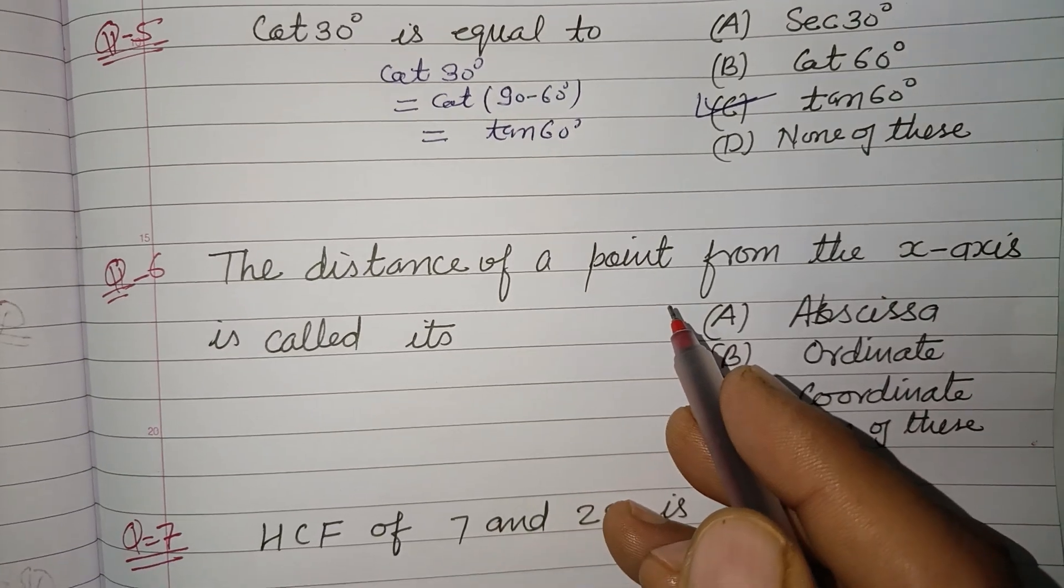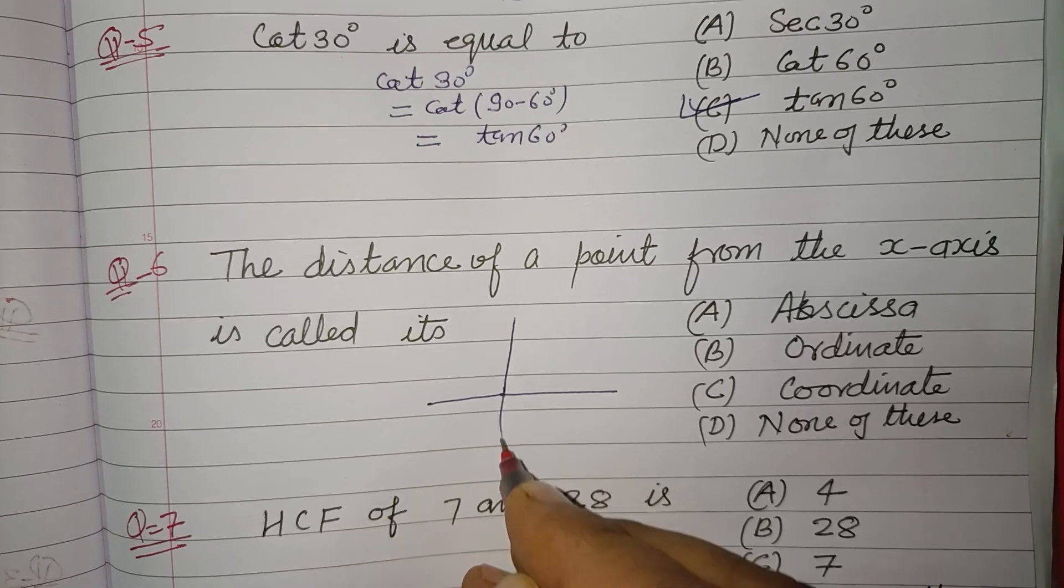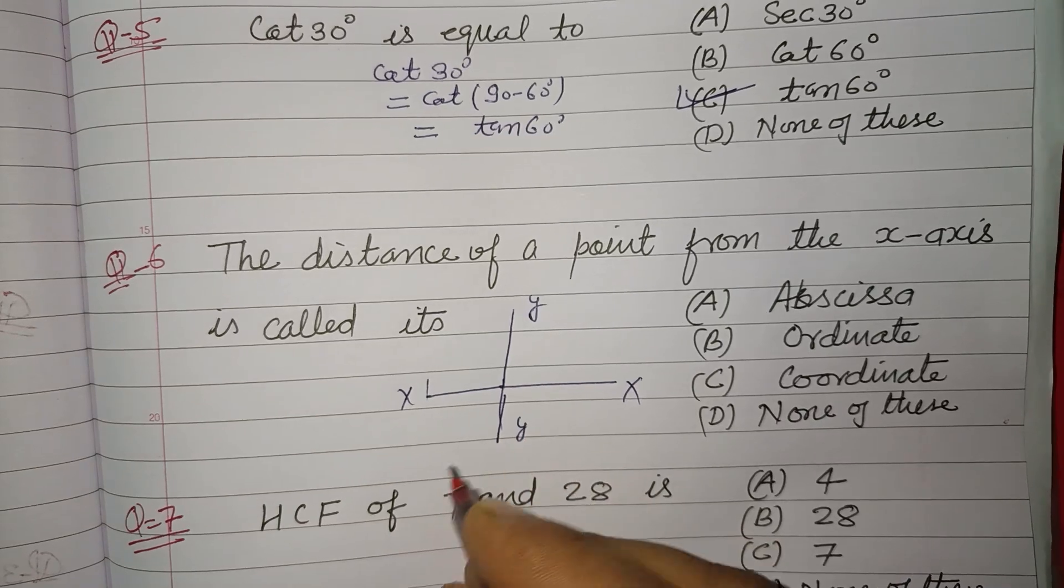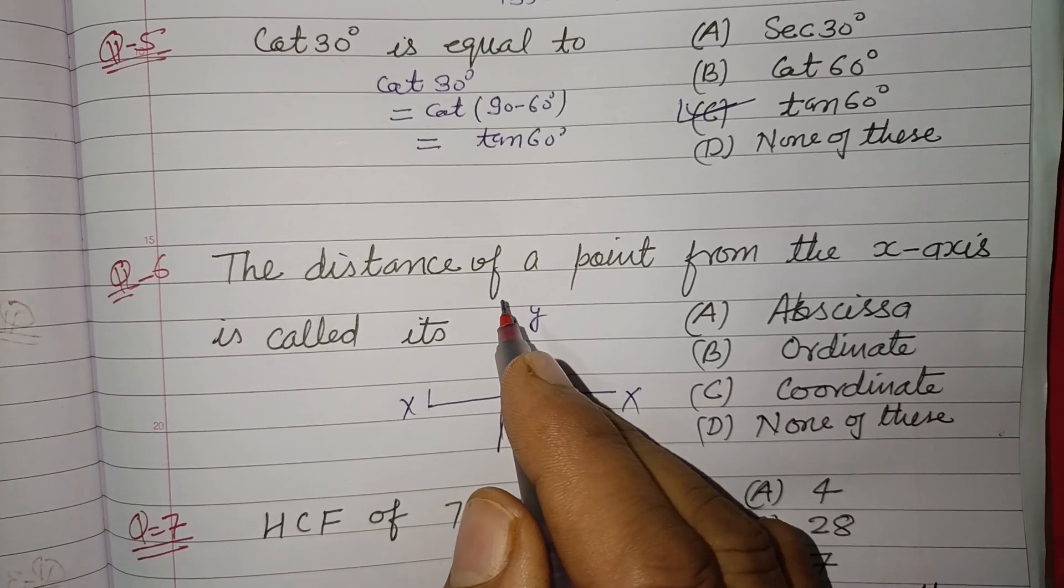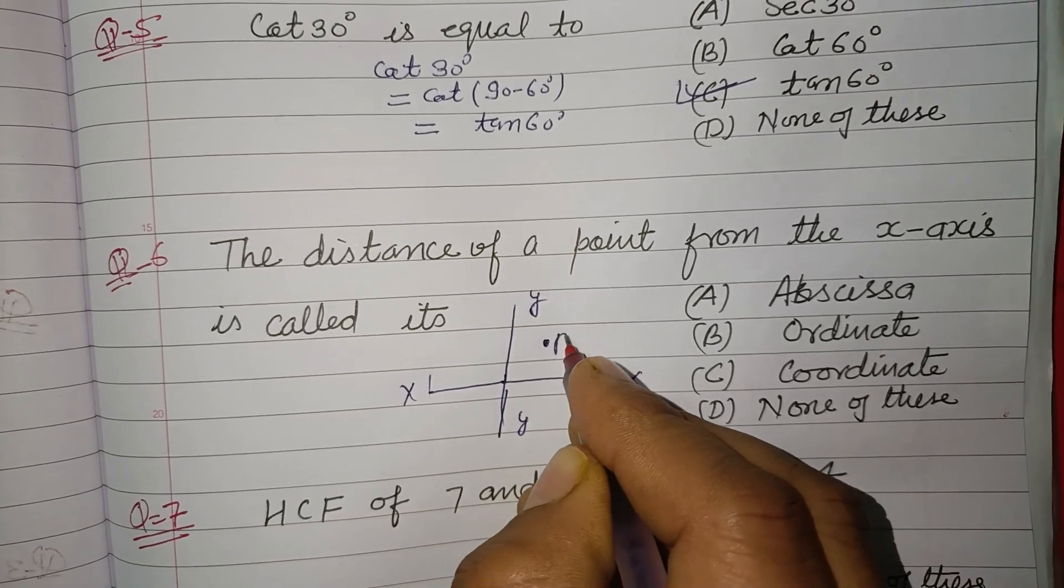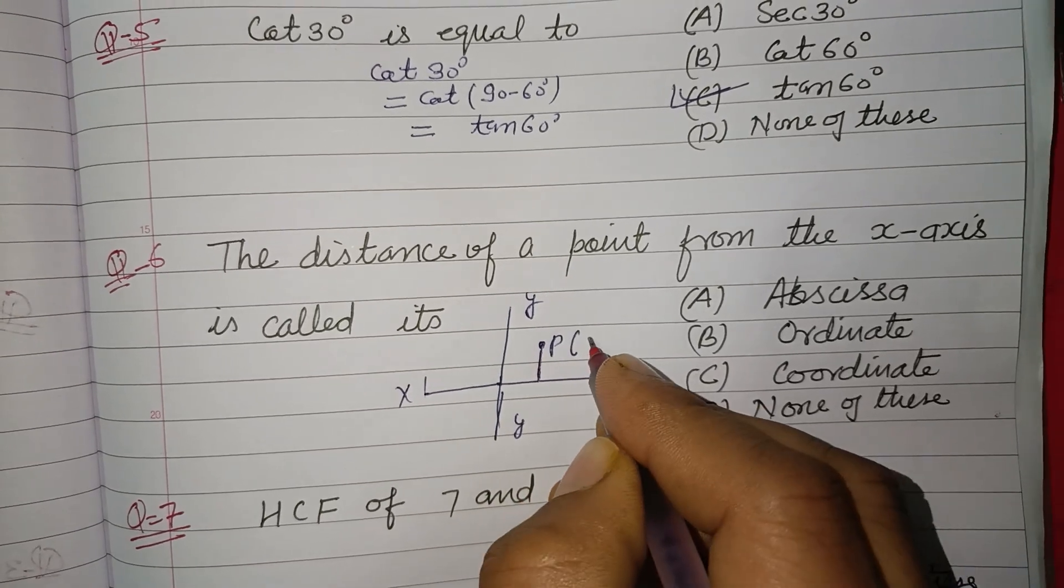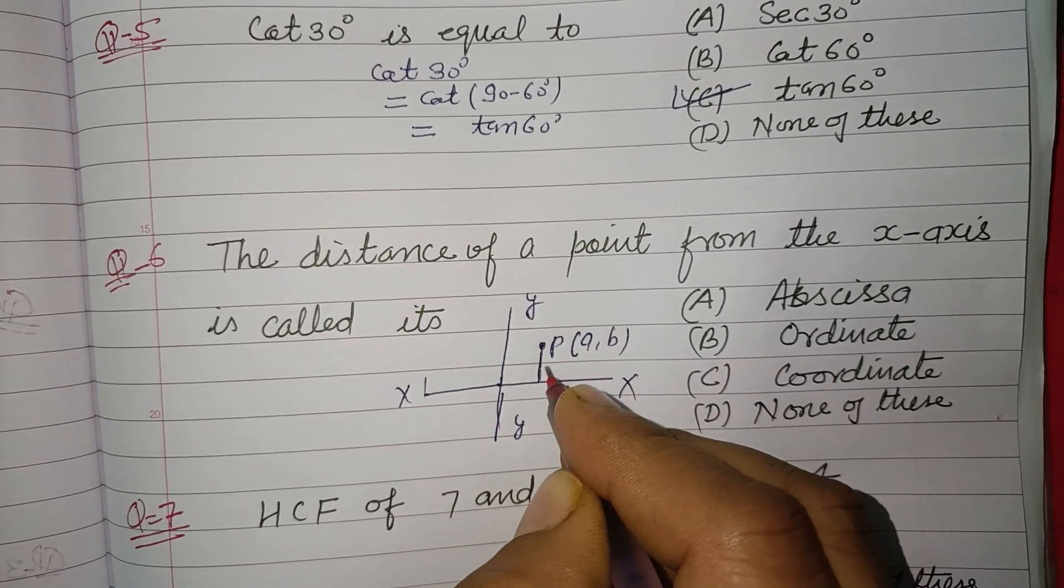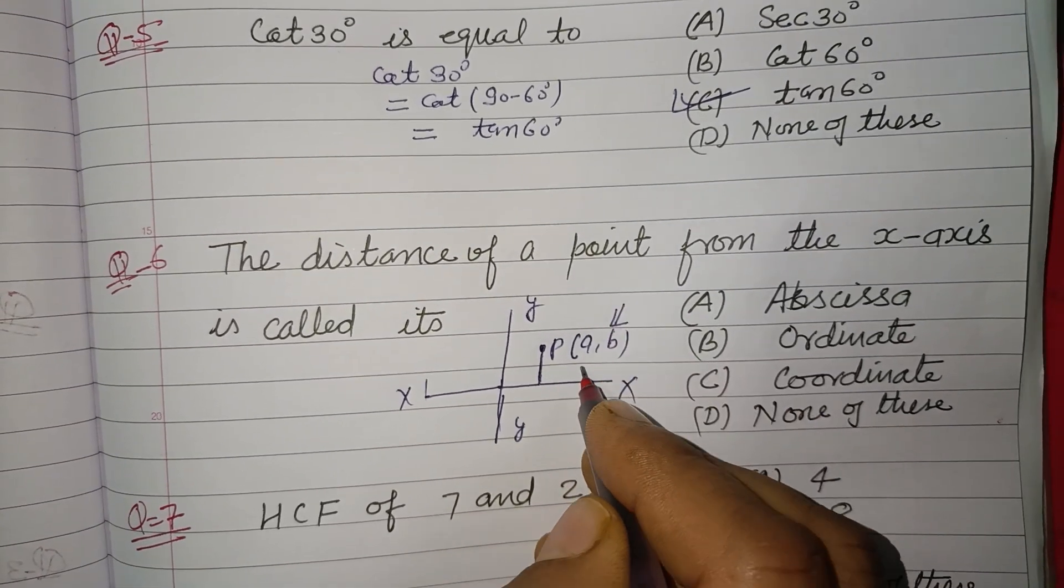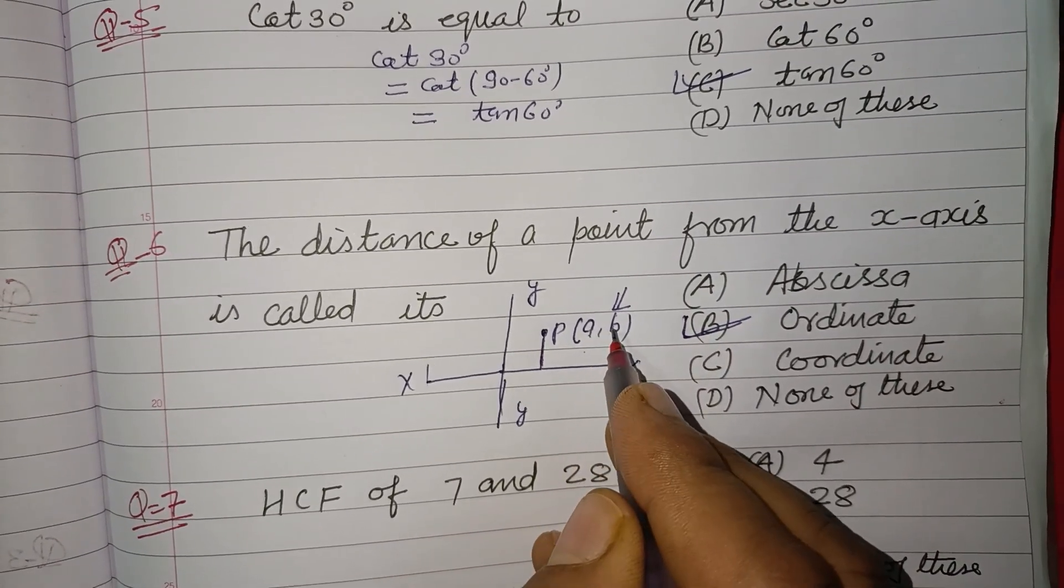The distance of a point from the X axis is called. So this is Cartesian plane - X, X dash, Y, Y dash. Distance of a point from X axis - if this point is here, its distance from X axis is called B and called ordinate. This is abscissa and this is ordinate. So distance of a point from the X axis is called ordinate.